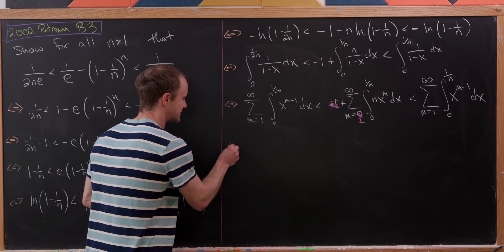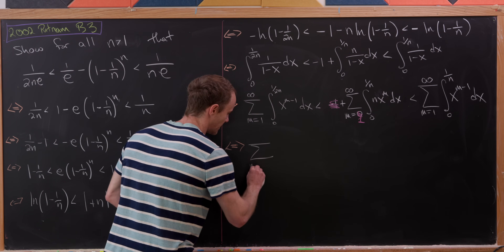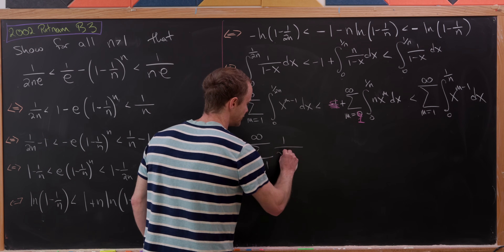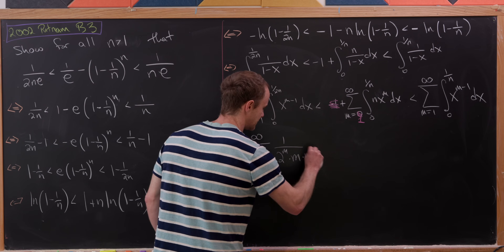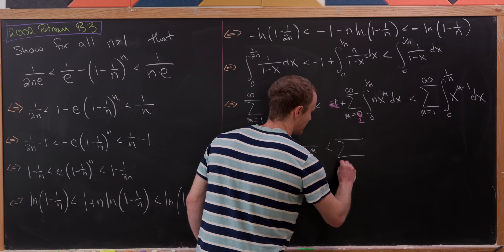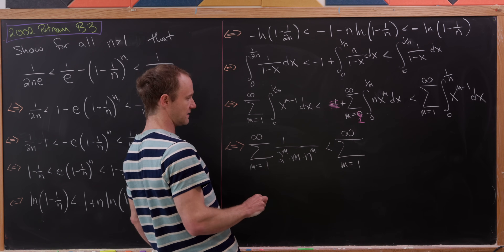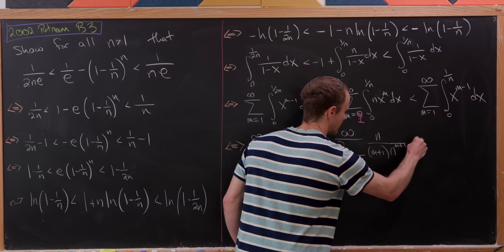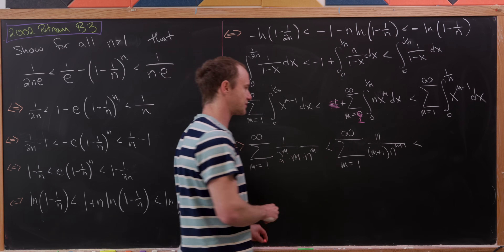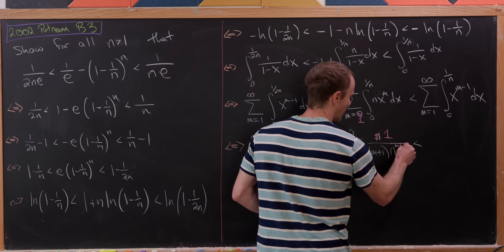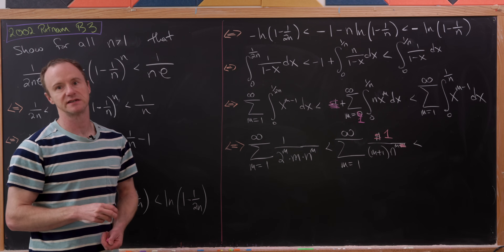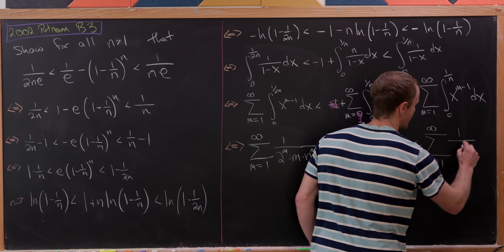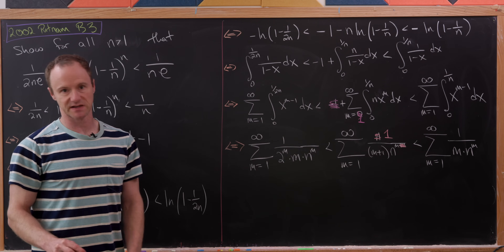Now we perform all the integrations. On the left-hand side we get the sum from 1 to infinity of 1 over (2^m · m · n^m). In the middle we get the sum from m equals 1 to infinity of n over (m+1)·n^(m+1), which simplifies to 1 over (m+1)·n^m. On the extreme right-hand side we get the sum from m equals 1 to infinity of 1 over m·n^m.